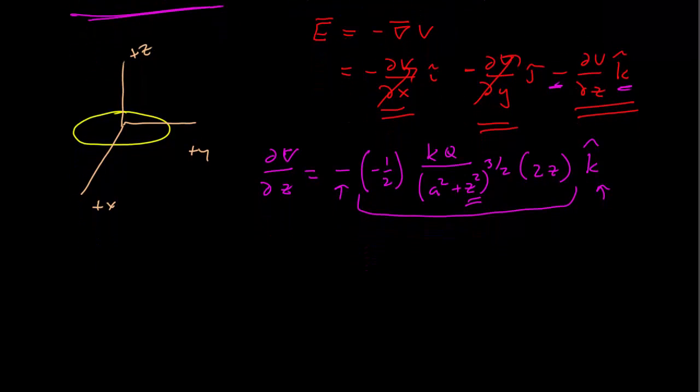And so if we simplify all that, put that together, just simplify our terms: these cancel, twos cancel, and we get kQz over (a squared plus z squared) to the three-halves k-hat. And that's our answer.